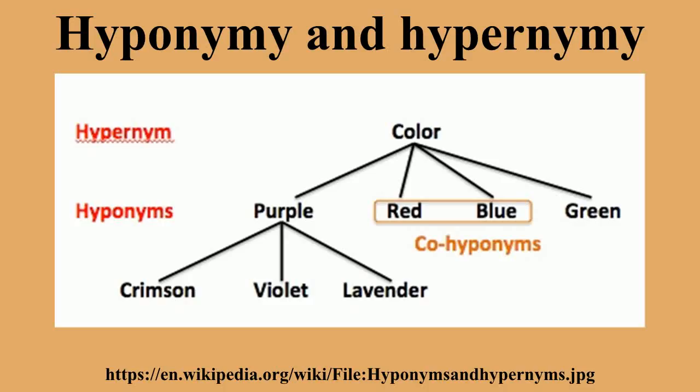The hierarchical structure of semantic fields can be mostly seen in hyponymy. They could be observed from top to bottom, where the higher level is more general and the lower level is more specific. For example, living things will be the highest level, followed by plants and animals, and the lowest level may comprise dog, cat and wolf.